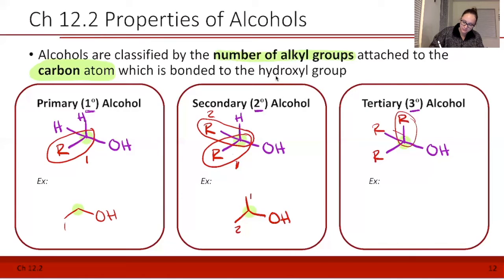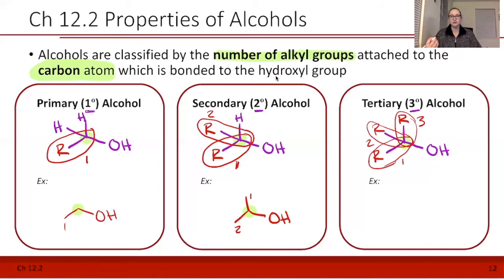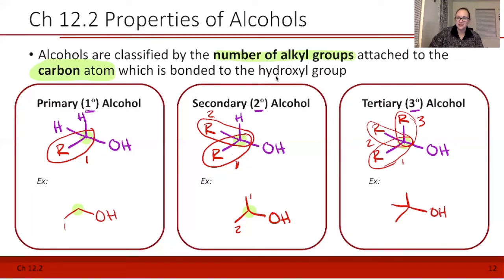Tertiary is going to have three carbons attached to that carbon, so all three of those are going to be R groups — one, two, three R groups connected to the carbon of the hydroxyl group. An example of this is technically called tertiary butyl alcohol, but you don't need to know that particular name. On this carbon, it has one, two, three other carbons attached.